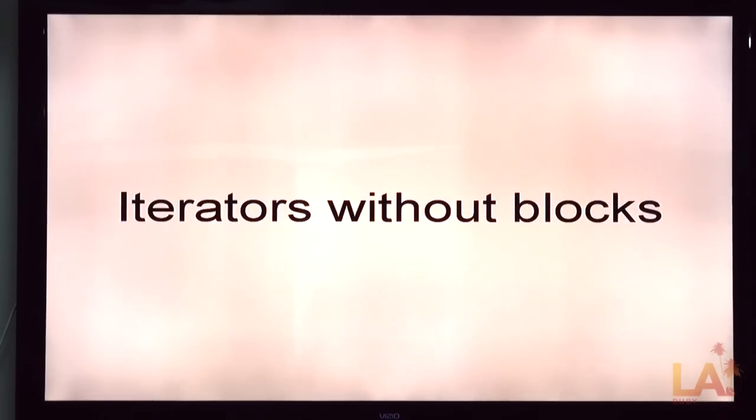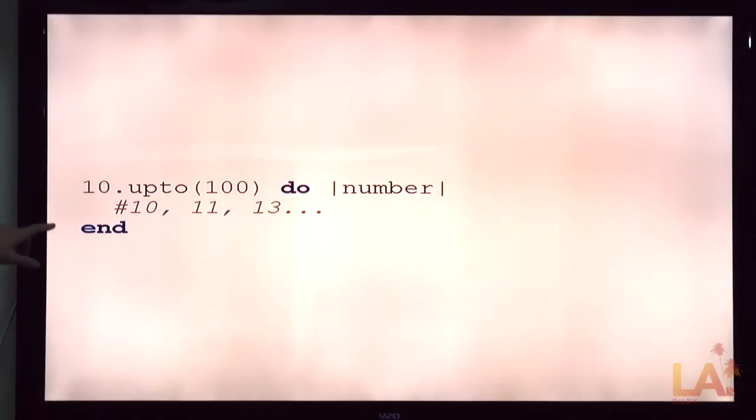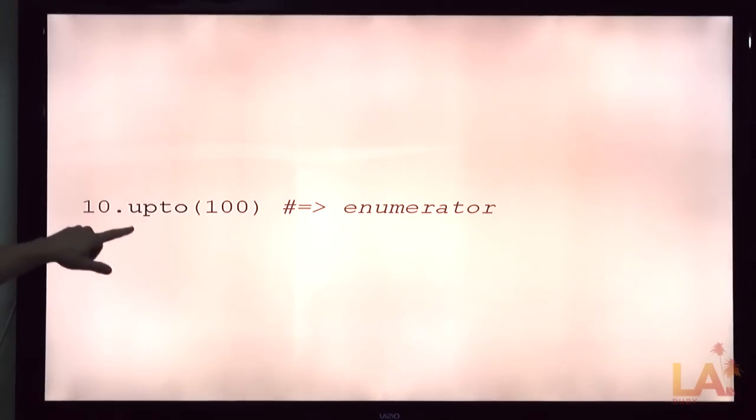If you call any iterator, most iterators, without a block. And this is one of those things where it's like, this must have been like a new thing with one nine. I think, I started learning from the 1-6 book. So I think that's been in 1-8. So everywhere you should be able to do this most of the time. So if you've got an enumerator and you don't give it a block. What you get back is an enumerator.